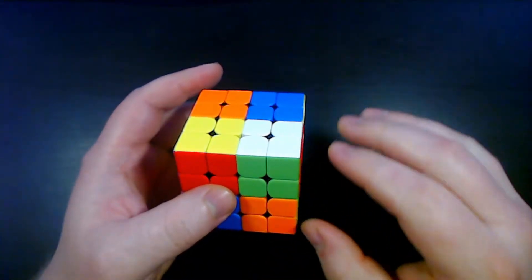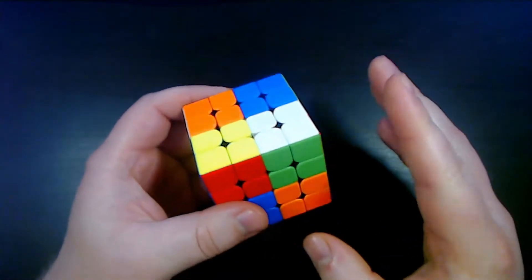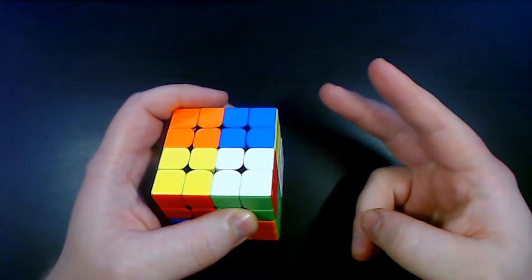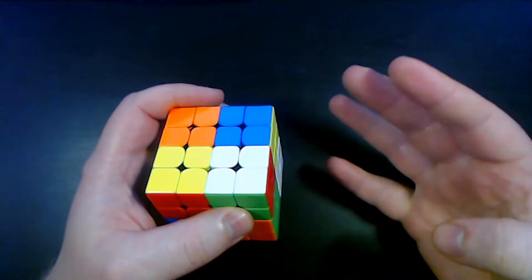Alright so with all that out of the way let's talk about the method itself. The method has four main steps: first six corners, last two corners, centers, and two by two.